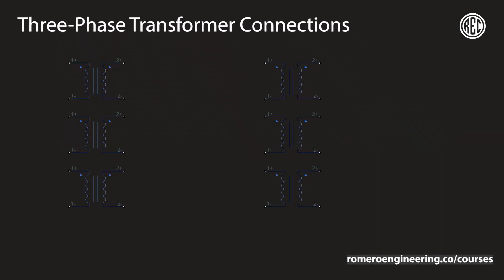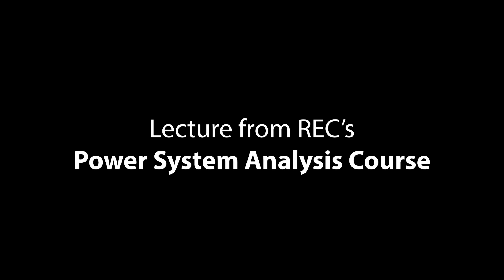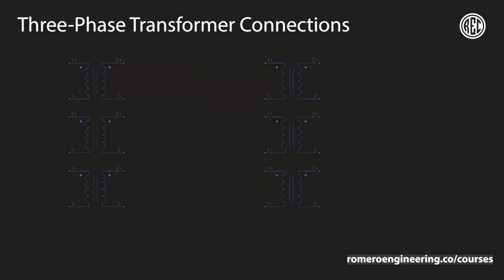Welcome back. So far we've talked about transformers, but we haven't talked about three-phase transformers, or more specifically three-phase transformer connections. A three-phase transformer can be connected in a Y configuration or a delta configuration. We have two types of connections, giving us four different combinations: a YY connection, a Y-delta connection, a delta-Y connection, or a delta-delta connection. All of these have their advantages and disadvantages with respect to each other.